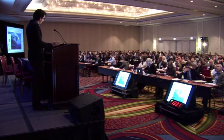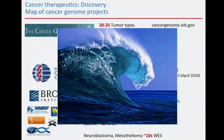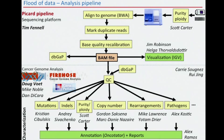In a nutshell, there is a huge amount of data — a flood we have to handle and take advantage of. We go from sequencing data to a BAM file, which is the aligned data against the reference genome, then through quality control and characterization pipelines in Firehose at the Broad, which detect genetic alterations: mutations, purity and ploidy of samples, copy number, rearrangements, and pathogens in tumor data.